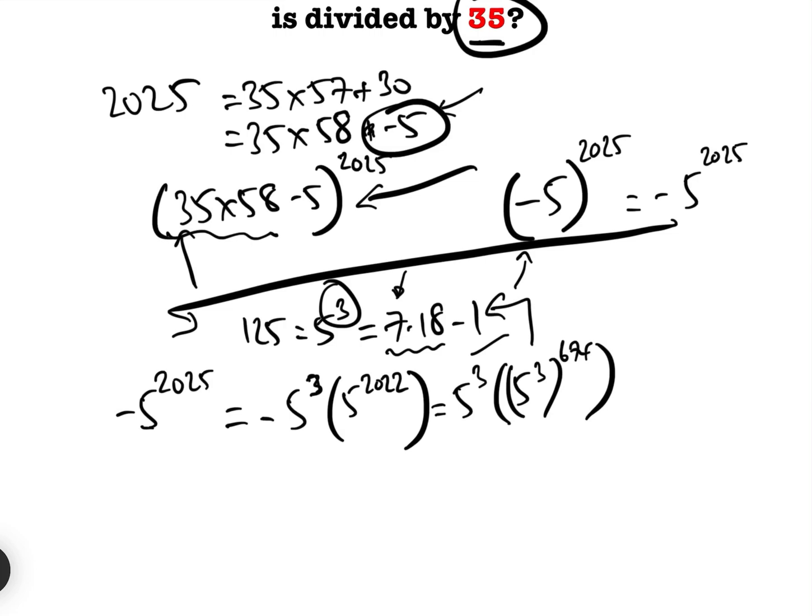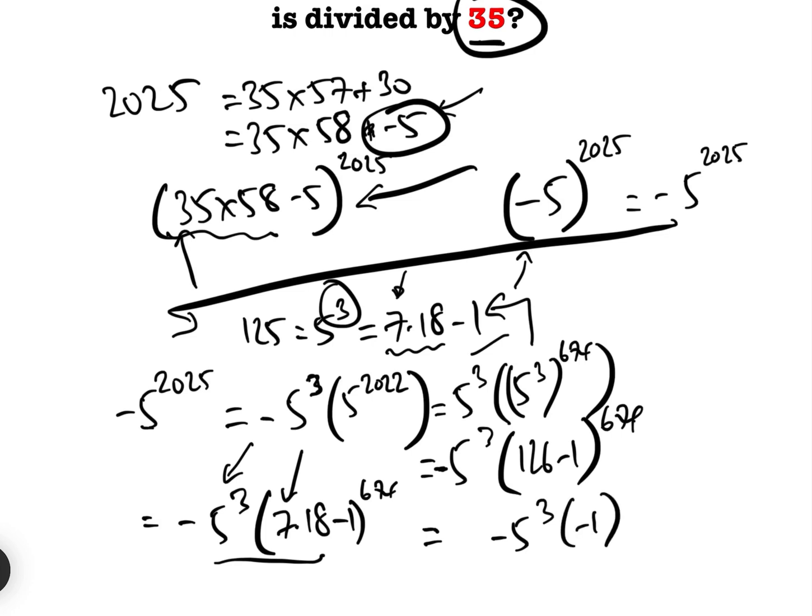And as we've just realized here, we can also write that as 5 cubed times 126 minus 1 to the 674. We make sure we don't ignore the minus sign. And we can rewrite that as minus 5 cubed times 7 times 18 minus 1 to the 674. Now when we expand this by the binomial expansion, we will find that all of the terms will have a 7 multiplied by a 5, which is 35. So we can ignore them, and we will be left with the final term, minus 5 cubed times minus 1 to the 674, which equals minus 5 cubed.